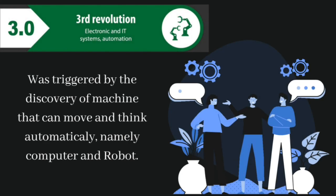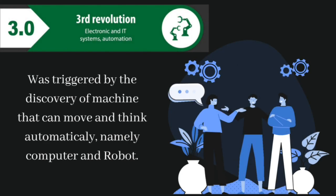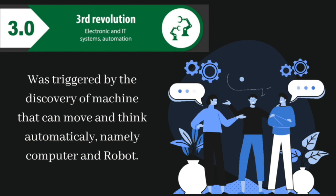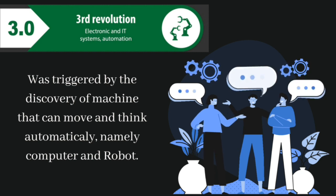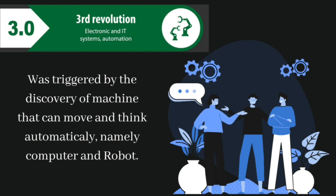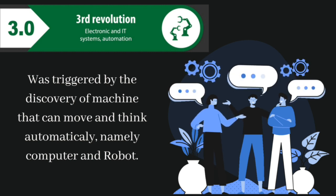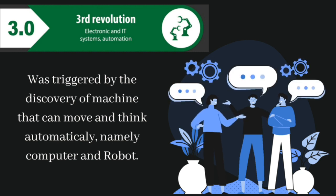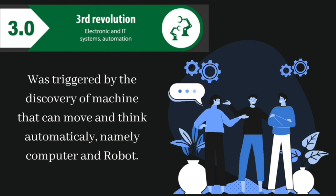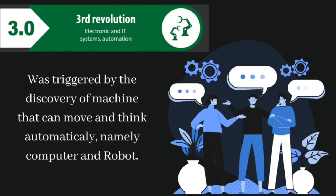The industrial revolution 3.0 was triggered by the discovery of machines that can move automatically, namely computers and robots. Computers were originally the size of a bedroom and used in World War II, but over time, rapid technological advances made computers smaller and gave them new features to help human work. With this advance, computers can be installed in machines that operate production lines and slowly replace human workers.